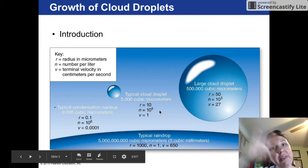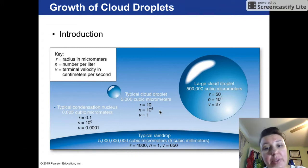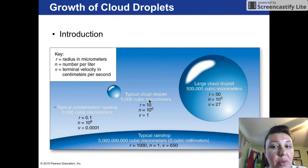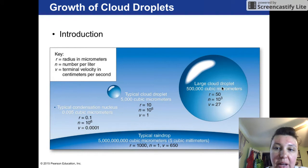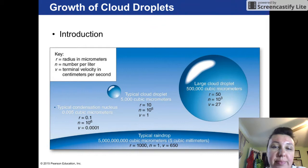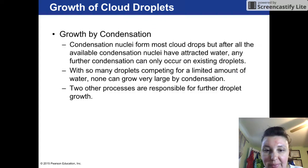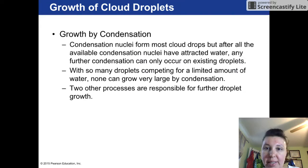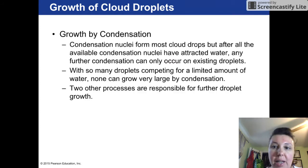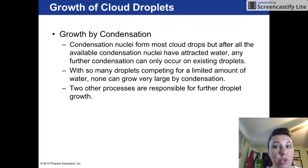Quadrupling that nuclei size gives you your typical cloud droplet — the size you see in a fluffy white puffy cloud. Going 100 times bigger than that gives the large cloud droplet size, the one you would see as a rain droplet. There are two processes for growing cloud droplets large enough to become actual rain droplets or snow crystals.